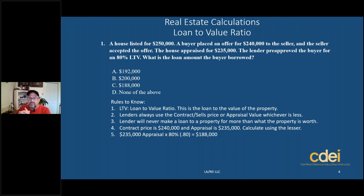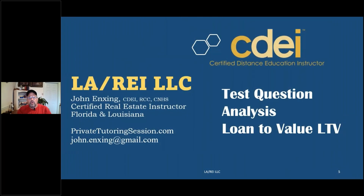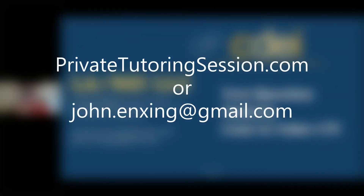Don't bite on the $250,000 list price — it has nothing to do with the problem. Test writers like to put those extra numbers in there to throw students off. The answer is C, $188,000. I hope you enjoyed this short session on loan to value ratio. If you need one-on-one help to test prep and get ready for your exam, go to privatetutoringsession.com. Good luck on your exam!